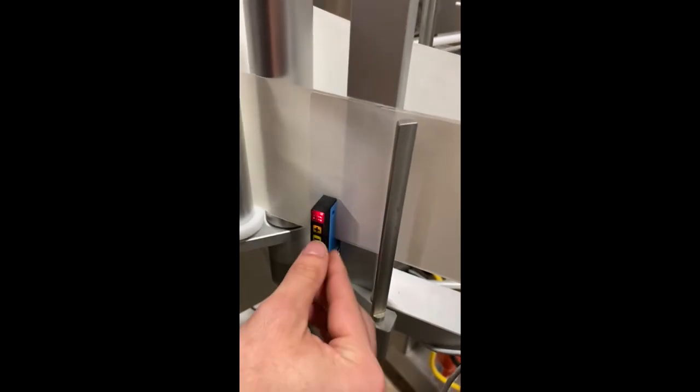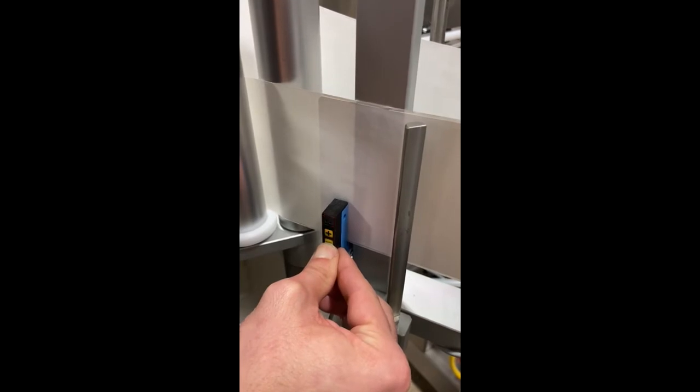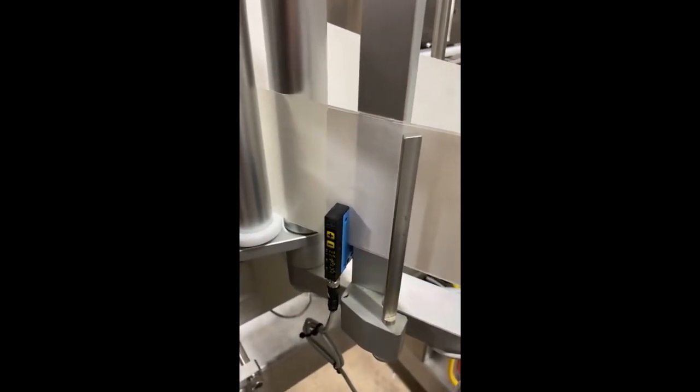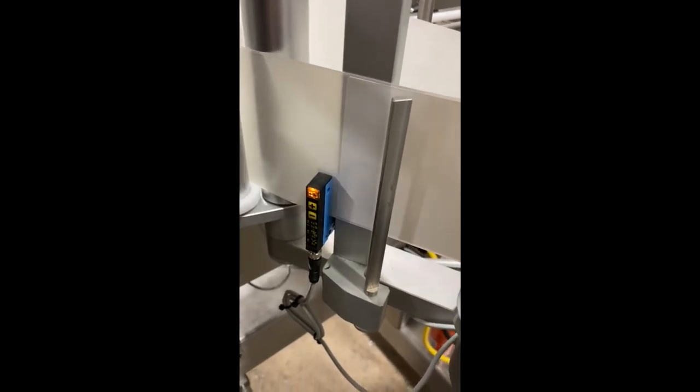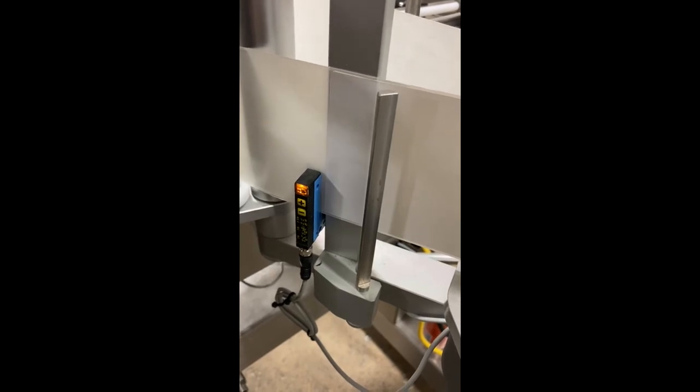Now you press the minus button for a second. Now the label sensor is already set up. You can see the difference between the label and the back of the label.